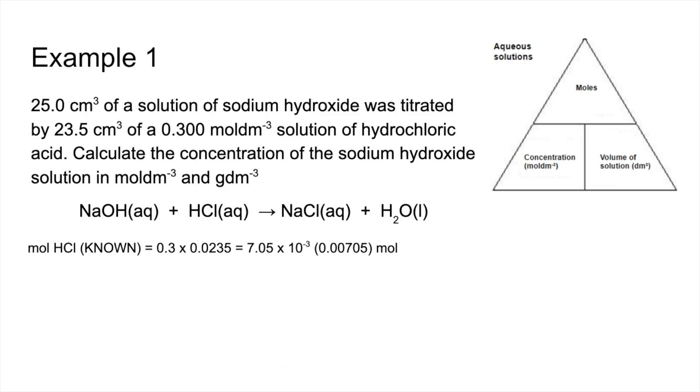Nice easy mole ratio of 1 to 1. So the moles of NaOH in that 25 cm cubed used in the titration is going to be the same. And then we just apply the formula. So concentration is moles divided by volume. So concentration comes out at 0.282 moles per decimetre cubed.